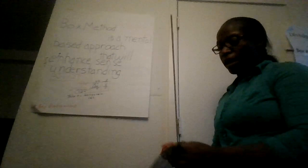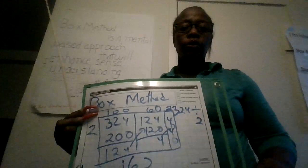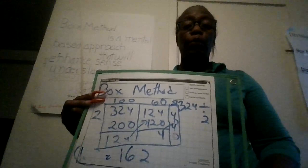You have 324 divided by 2. At the end of the problem, it will look like this. You see where the box shows 2 times 100 equals 200. Subtract 200 from 324, which gives you 124.